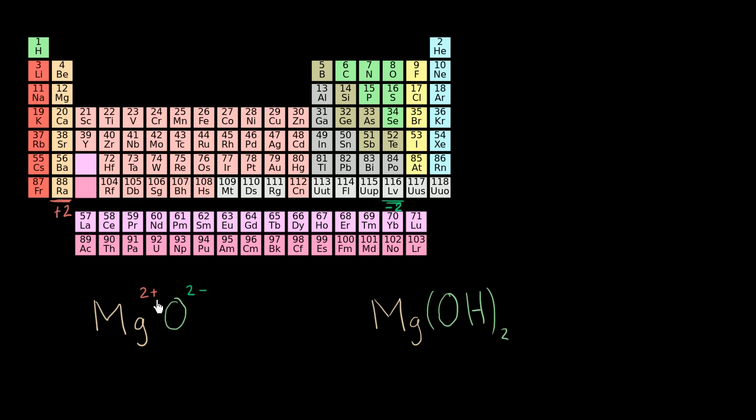And not only in this case is the oxidation state a hypothetical ionic charge. If these were to be ionic bonds, this actually is an ionic compound. Oxygen actually does take two electrons, and magnesium actually does give away two electrons. So in this case, the oxidation state is actually describing what is happening ionically.